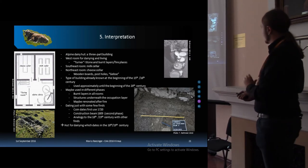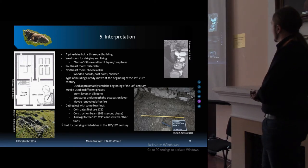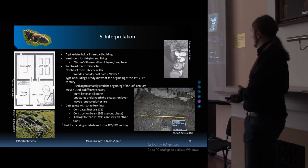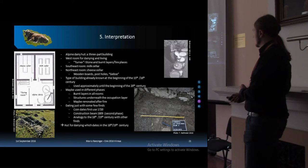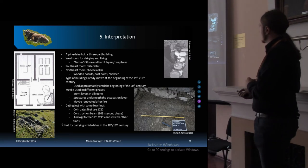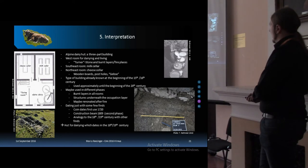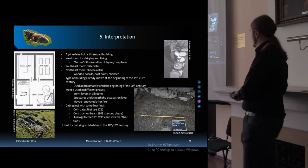So the interpretation in conclusion is that the Alpine Dairy Hut has been a three-part building. We know this style of building since the 15th and 16th century. So also in the last time of the medieval period, they built this type. So maybe we have a continuity to the medieval times.